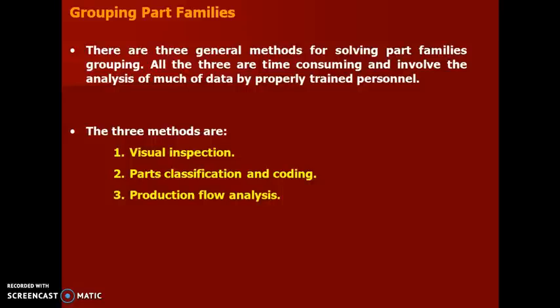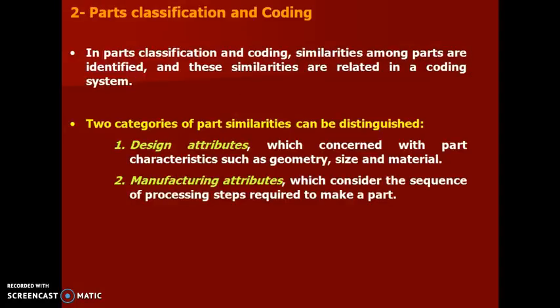In visual inspection, you visualize the component and then group it accordingly. In production flow analysis, you make use of the routing sheet. In this class, we are concerned about the part classification and coding method, where similarities among parts are identified and these similarities are related in a coding system.